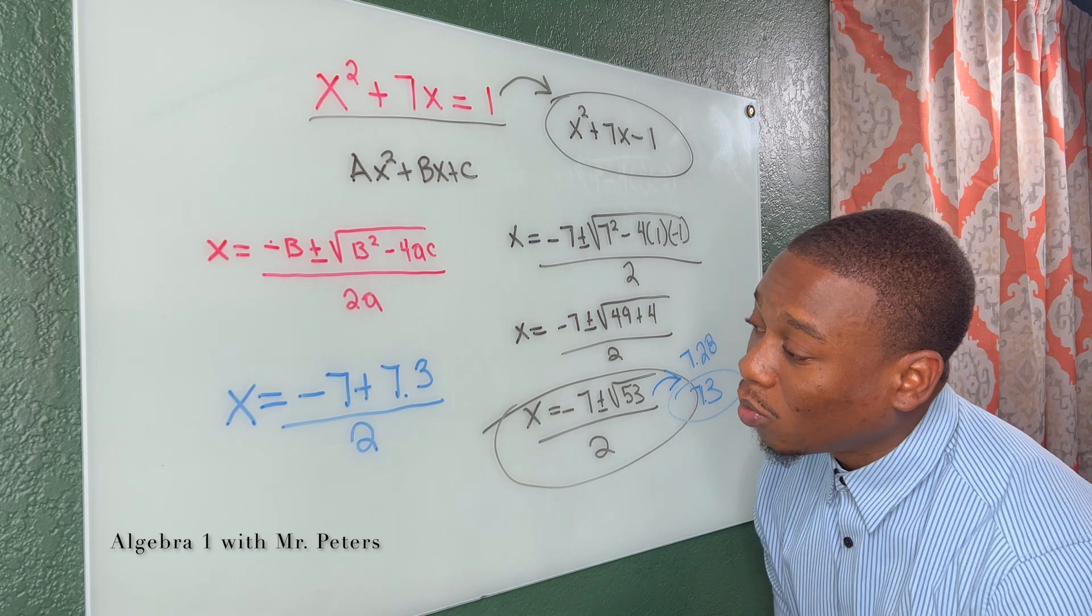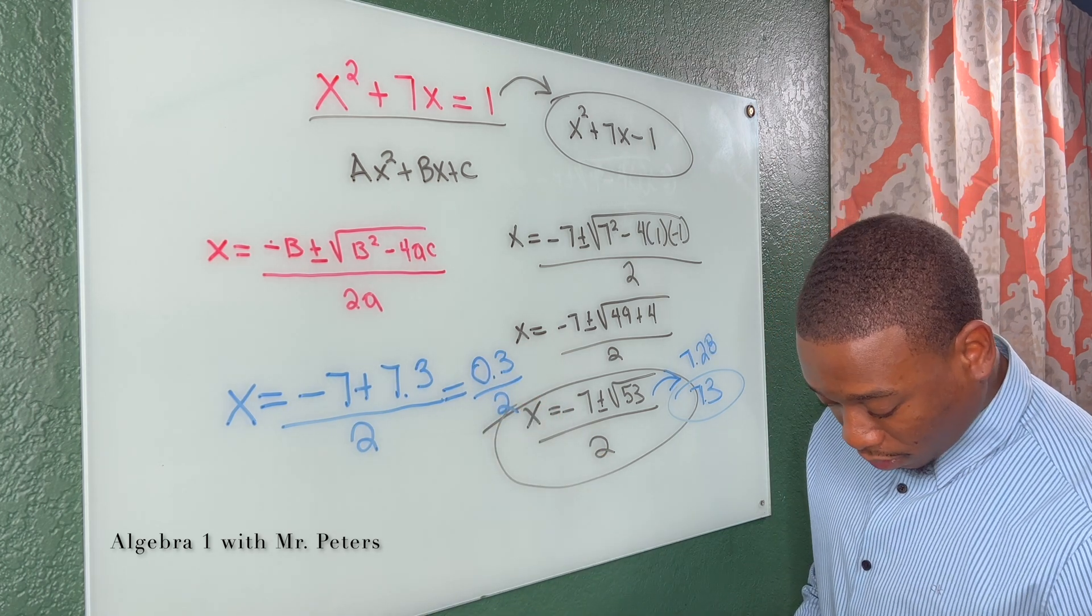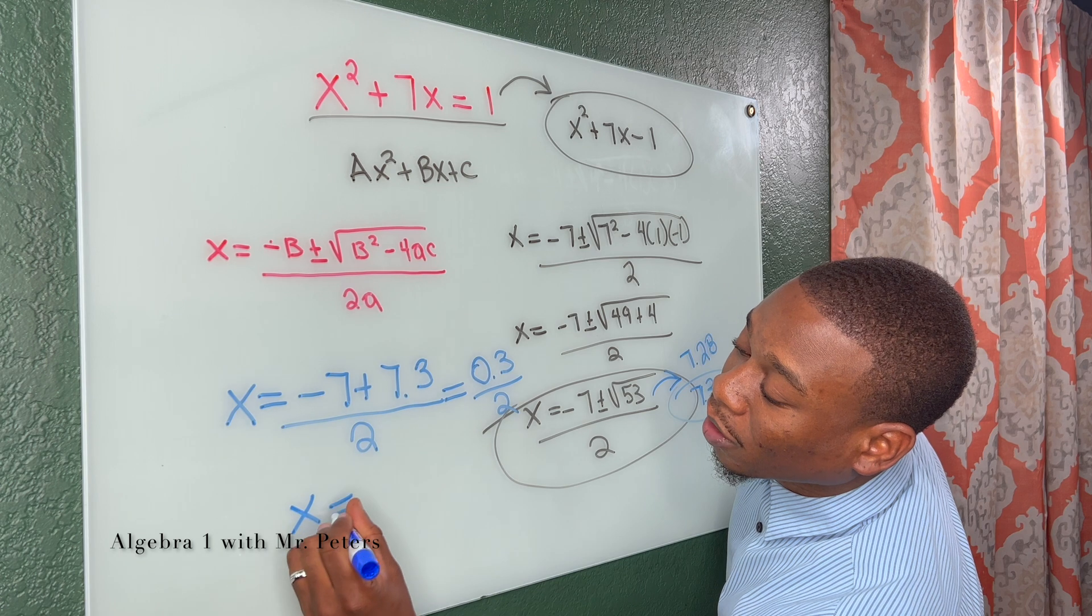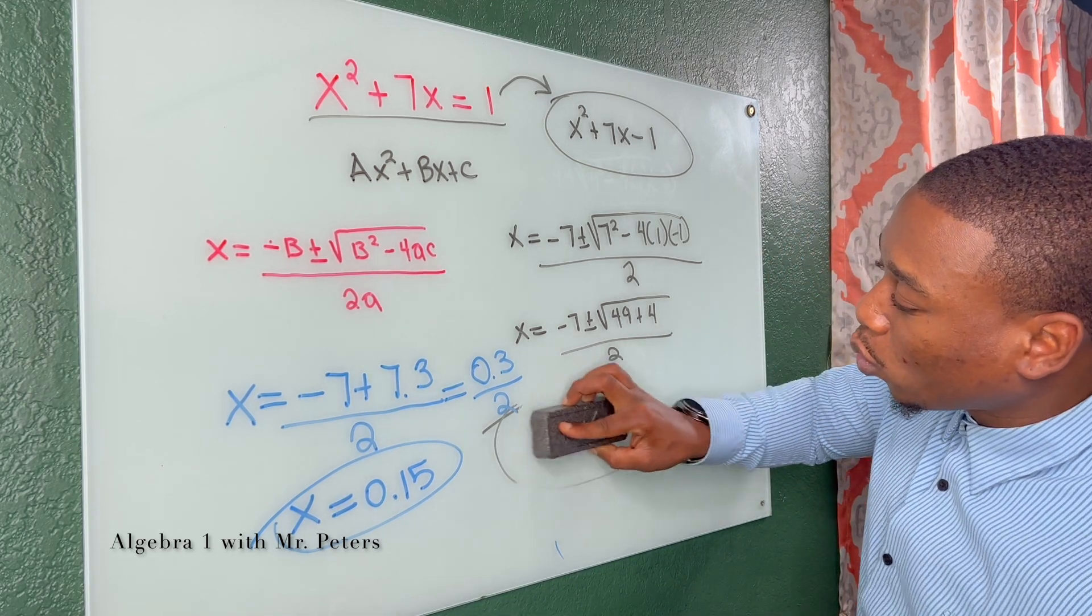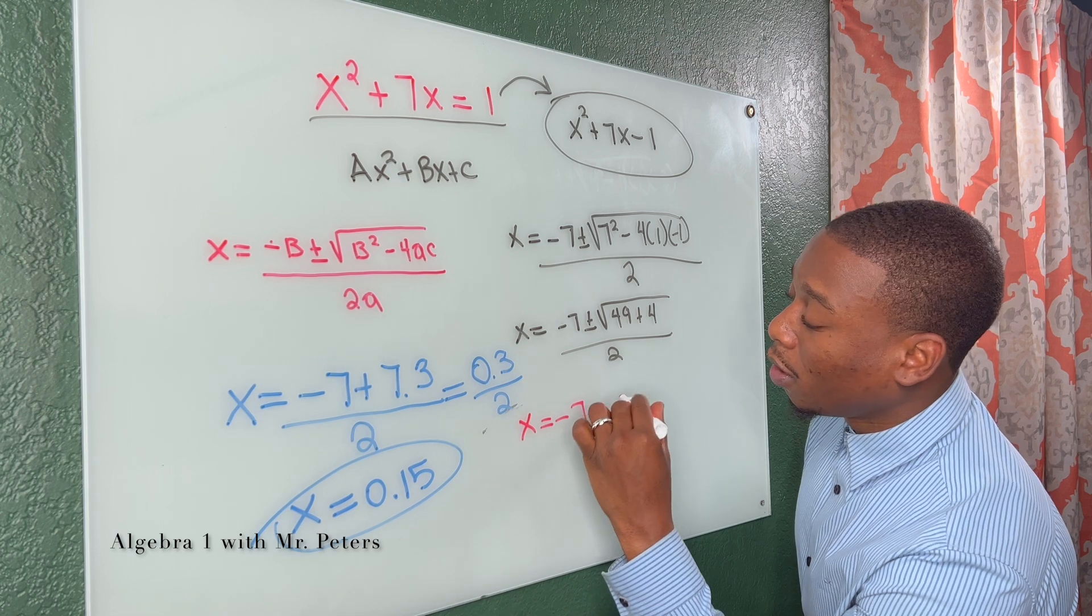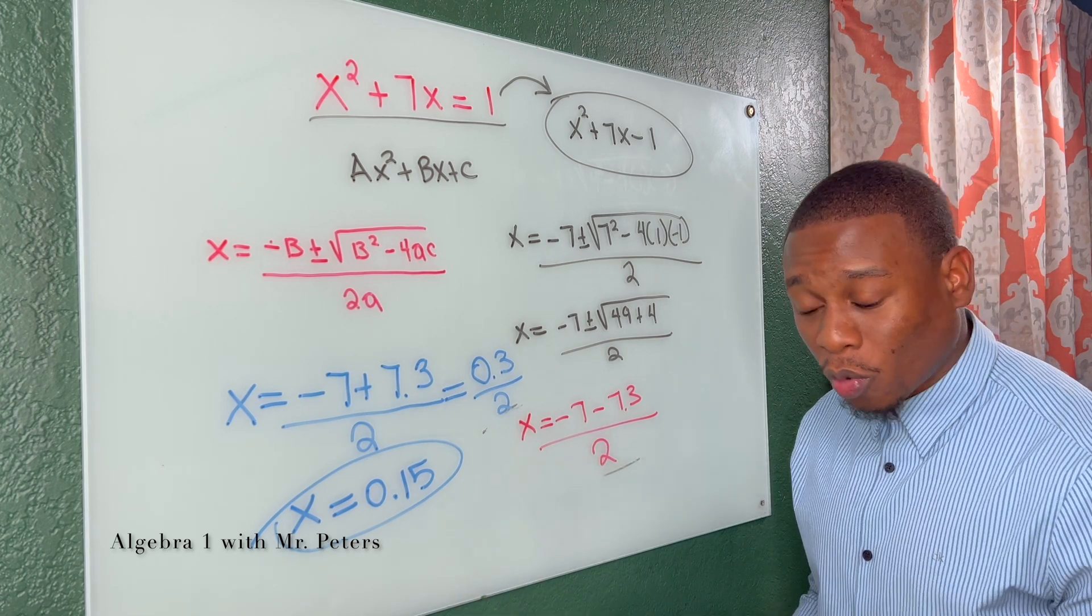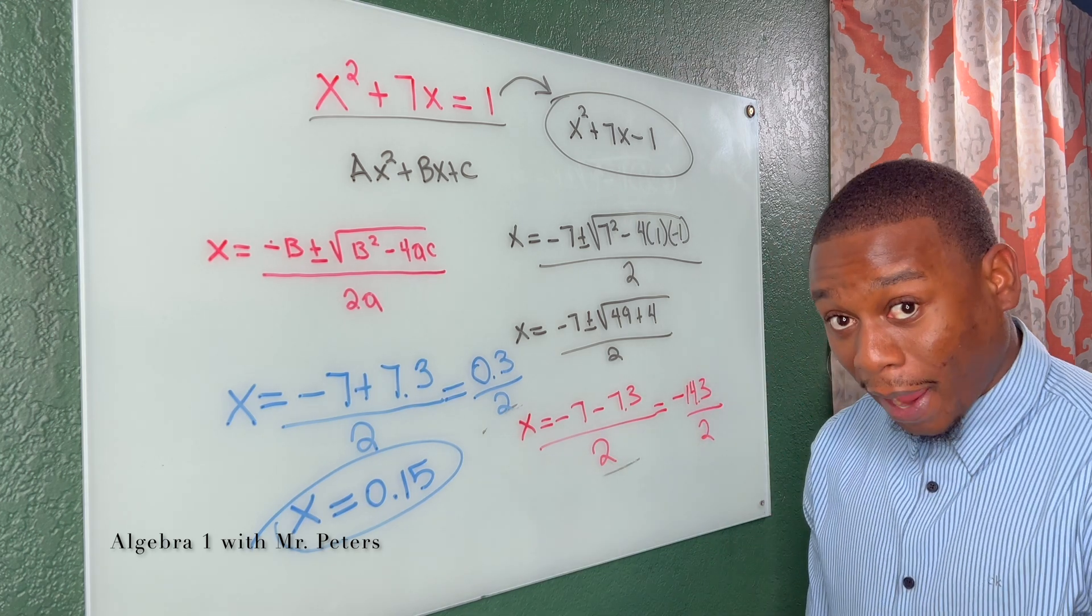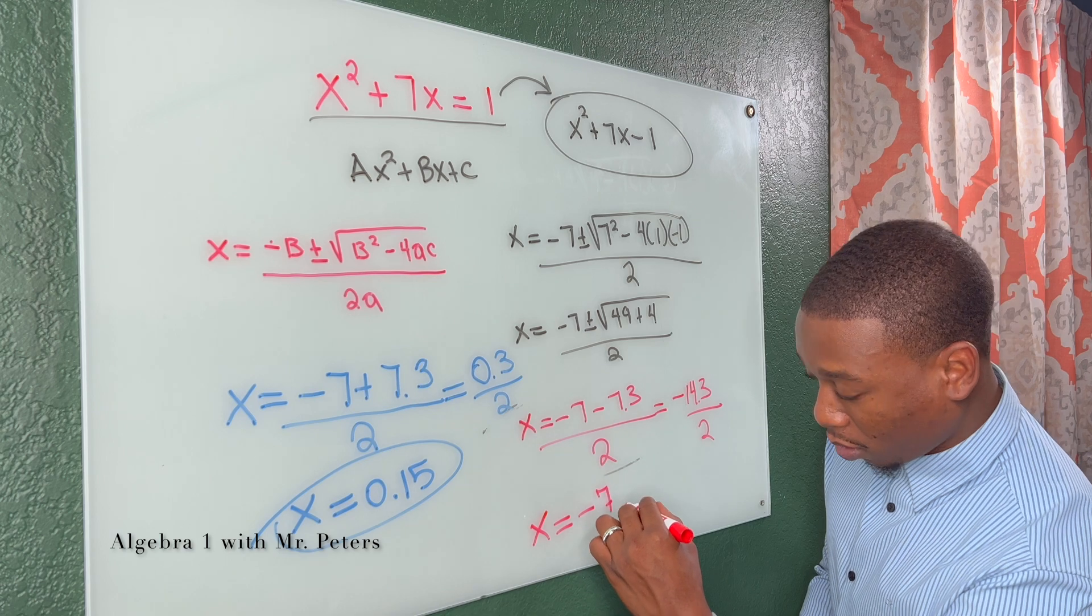That's the first one. And let's just do that real quick. So what we're going to have is 0.3 over two. Once we divide by two, we're going to get X is equal to 0.15. So that's the first answer. Now, we're going to switch to red and find the second answer. So we have X is equal to negative seven minus 7.3 all over two. So now we get X is equal to negative 14.3 over two. We get X is equal to negative 7.15.